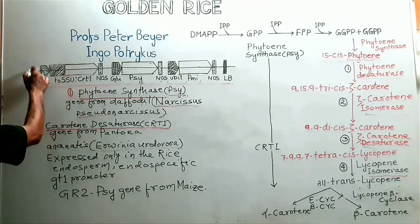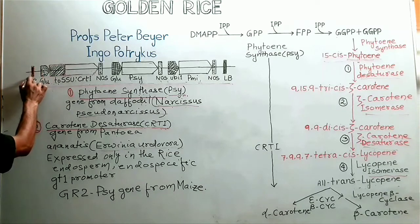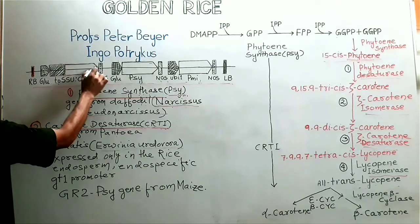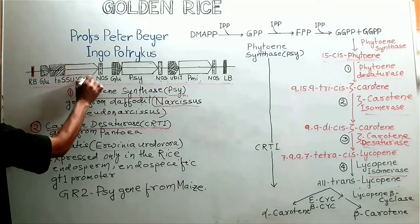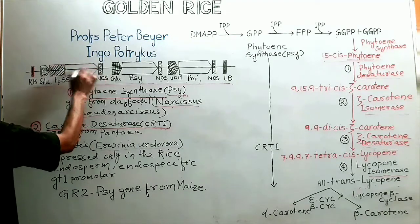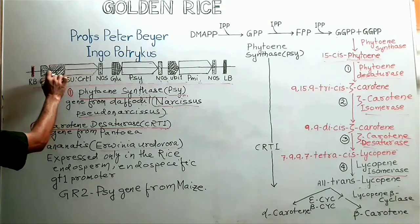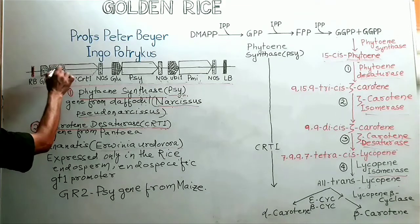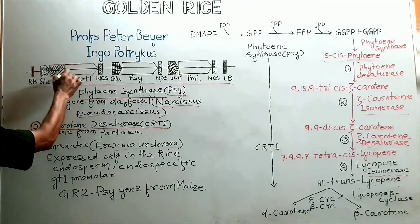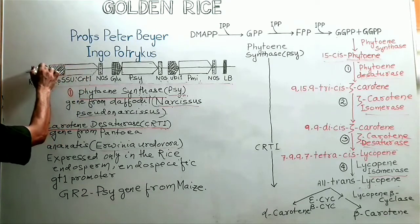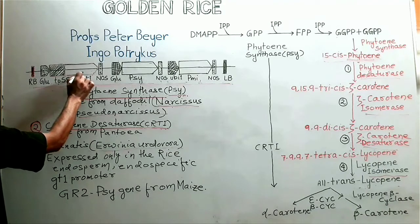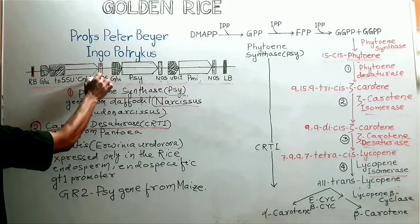This gene construct begins with T-DNA right border sequence. After this right border sequence, there is the gene that codes for the enzyme bacterial carotene desaturase. This is the CRTI gene. The CRTI gene has been associated with ribulose bisphosphate carboxylase small subunit transit peptide for chloroplast localization. This gene is placed under the control of rice endosperm-specific glutelin promoter. After CRTI gene, this is the nopaline synthase terminator.